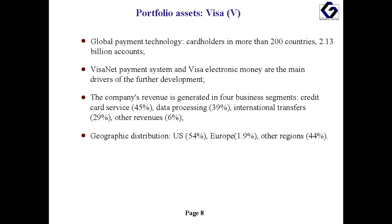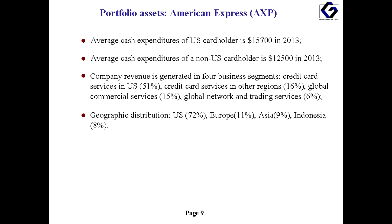Visa is a global payments technology company which provides access to electronic payments in more than 200 countries worldwide. The number of Visa accounts reached 2.13 billion. The company's earnings are generated by four business segments. American Express is an international payments company and also one of the world's largest card issuers. The company's earnings are based on percentage profits and commissions generated by four business segments. The distribution of American Express revenues according to geography and business segments from the annual financial statement of 2013 is represented below.